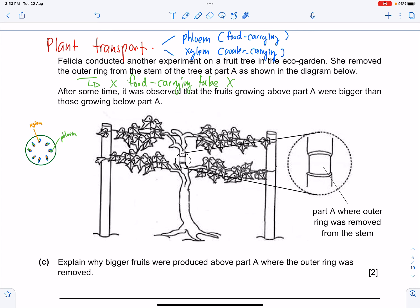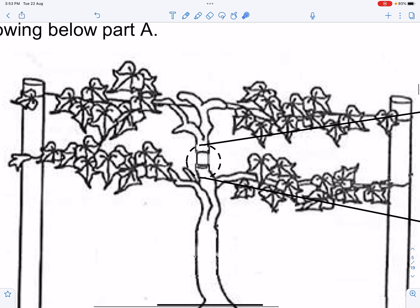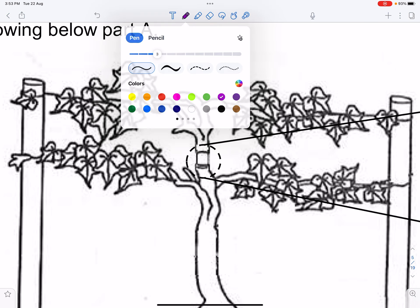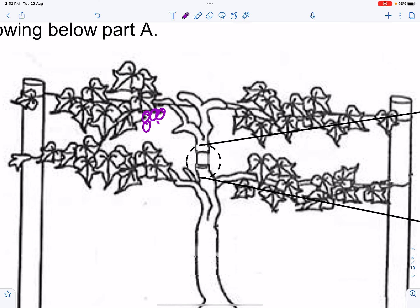Point A is here. You have to say it cannot be transported below point A or below the part A. Because it cannot be transported here, it needs to go somewhere, right? So instead it will be stored inside the fruits.